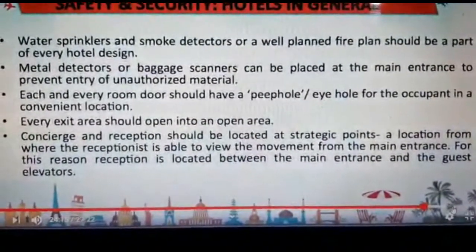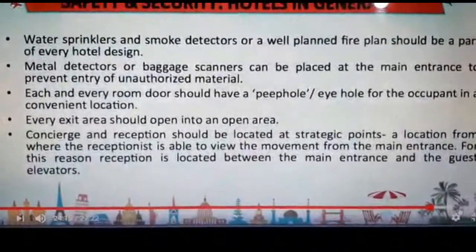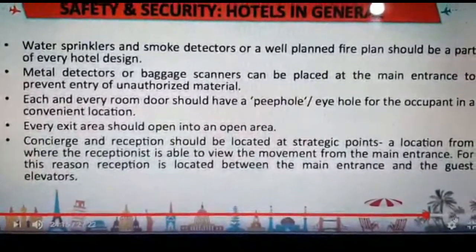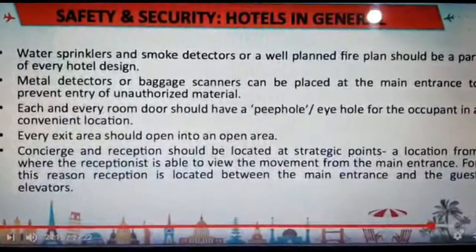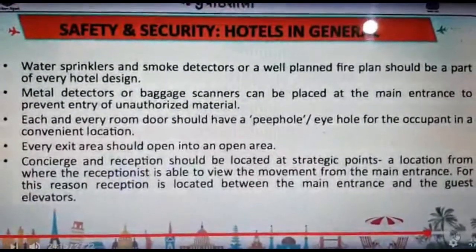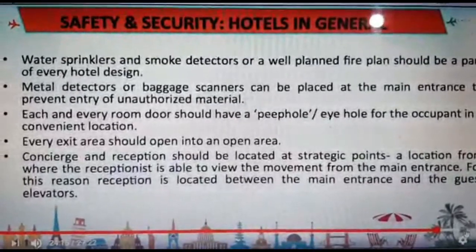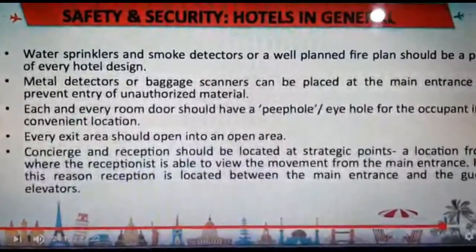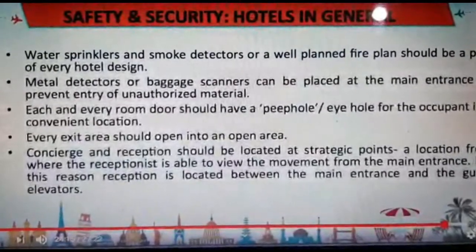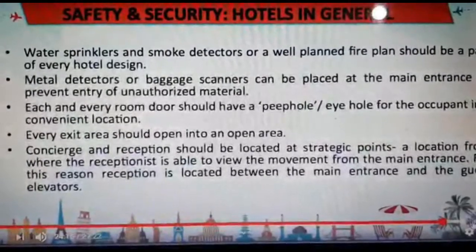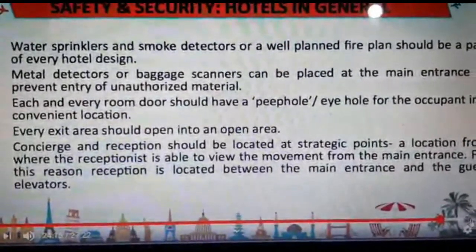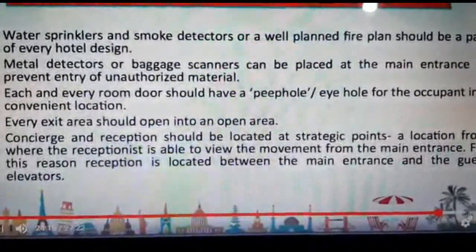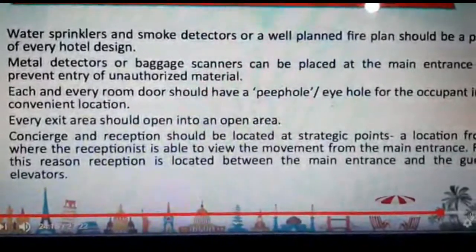We should also inform the guest during the room tour. Fire extinguishers should be placed at all convenient points at regular intervals. Water sprinklers and smoke detectors should be part of the fire plan and design of every hotel. Metal detectors and baggage scanners should be placed at the main entrance, and entry of any prohibited item or unauthorized material should be barred. Each guest room should have a peephole. Concierge and reception should be located at a strategic point from where the receptionist can view the main entrance movement — reception is located between the main entrance and the guest elevators.